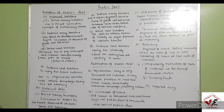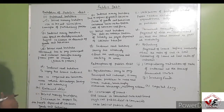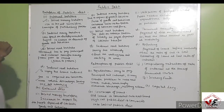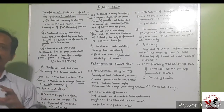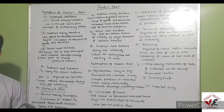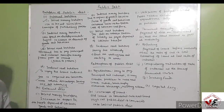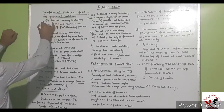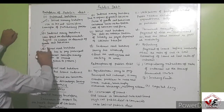For the indirect real burden: to repay loans, indirect taxes are imposed on the common mass, which discourages saving, investment, and the working capability of the people. When the government imposes indirect taxes, the disposable income of the people will decrease, which hampers their working capability, investment, saving, and overall prosperity. That is the indirect real burden.